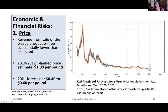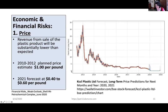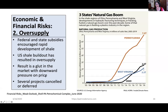First, price risk: revenue from the sale of plastic will be substantially lower than forecasted. The planned price was a dollar a pound for the plastic product and now it is forecast to be 40 to 60 cents per pound — not expecting to be robust in terms of product return. Second, there is oversupply: the boom in gas production has followed a federal policy of encouraging gas production for export and other uses. The shale buildout has resulted in supply that exceeds domestic demand and has saturated even parts of the international market, putting downward pressure on price. Several projects have already been cancelled or deferred.